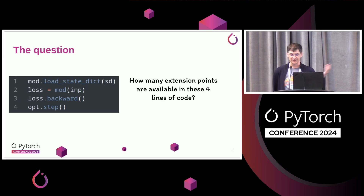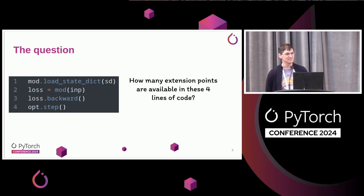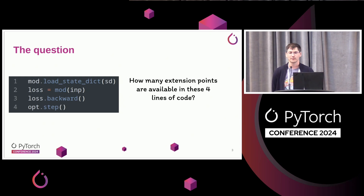A quick question — basically this whole presentation is about: how many extension points are available in these four lines of code? Most people here are familiar with these lines of code where you load a state dict, do a forward on a module, do a backward, and then do an optimizer step.